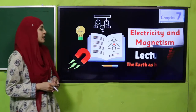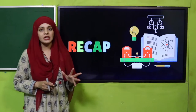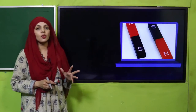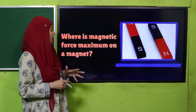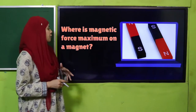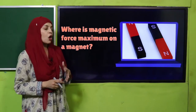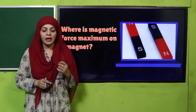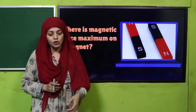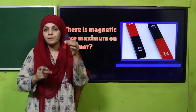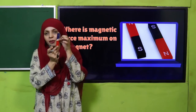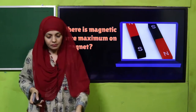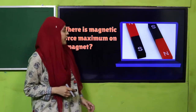Before that, let's quickly recap what we did in the previous lecture. The question is: where is magnetic force maximum on a magnet? The magnetic force — where is it maximum? On the poles of the magnet. Very good.